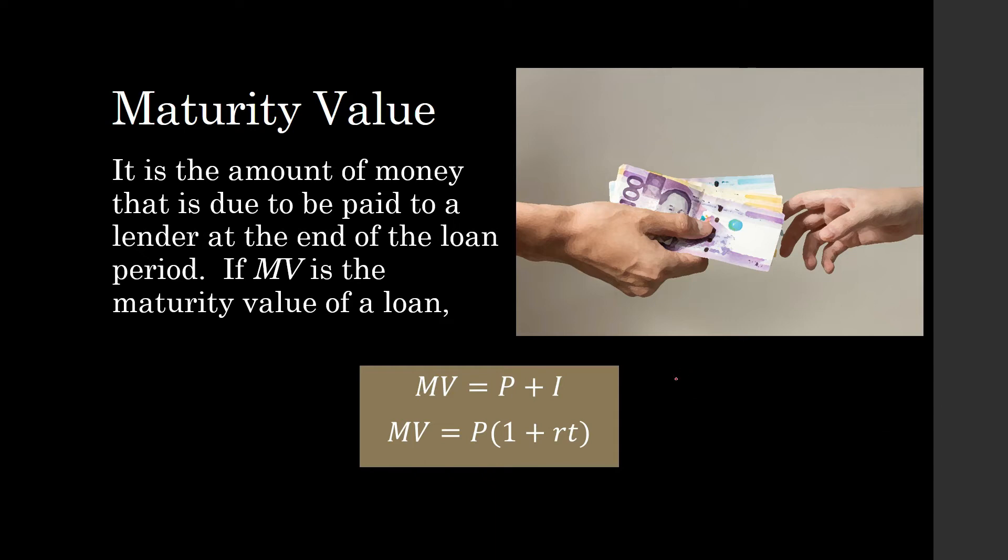So let us show why it came to be that way. MV is equal to P plus I, but I is equal to P times R times T. And so we factor out a common factor, and we are left with 1 plus R times T.